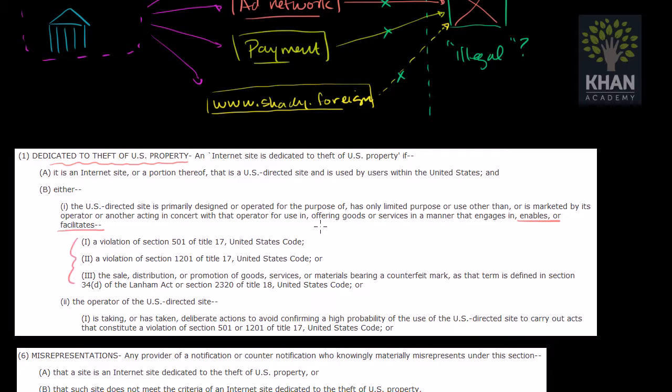Now this is interesting: enables or facilitates all of these violations. And these are the violations that would be illegal. You're selling things that you can't sell. You're infringing on other people's copyrights. And it might seem harmless, this enables or facilitates, until you think about what that could encapsulate. If I have a site, I am part of Khan Academy, let's say someone puts a message on Khan Academy and from Khan Academy they link to a site that actually is really illegal and really shady. They link to it in the message boards. Well under this, is Khan Academy enabling or facilitating? And if that's the case, then Khan Academy, by this definition, would be considered to be a site that is dedicated to theft of US property.